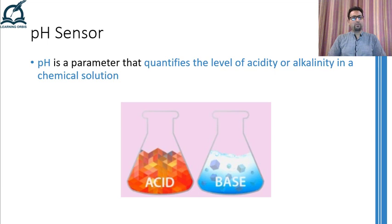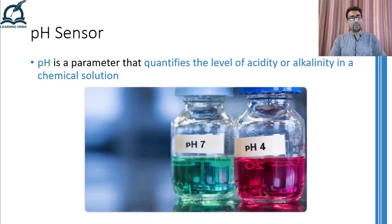Simply put, pH is a number that defines the acidity or alkalinity of any solution. Being acidic or alkaline has certain advantages and disadvantages depending on the situation. For example, certain chemicals should have a defined pH before they can be used in a chemical industry to get the desired output.